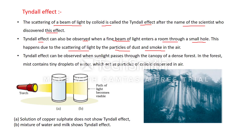This is due to the scattering of light by particles of dust and smoke in the air. The Tyndall effect can also be observed when sunlight passes through the canopy of a dense forest. In the forest, mist contains tiny droplets of water which act as colloidal particles dispersed in air, and so the forest can also show the Tyndall effect.